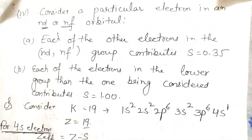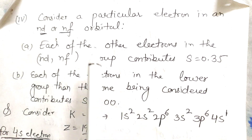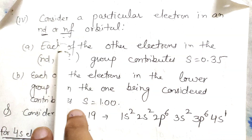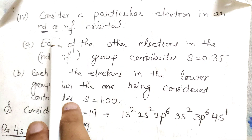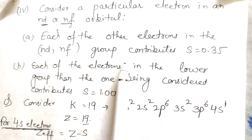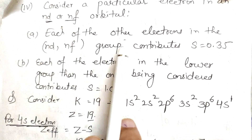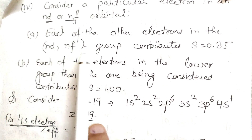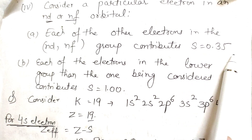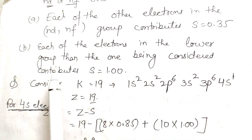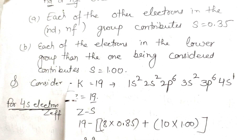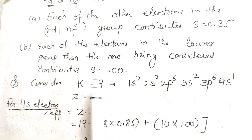For a particular electron in an ND or NF orbital: each of the other electrons in the same ND or NF group contributes S = 0.35, and each of the electrons in any lower group than the one being considered contributes S = 1.